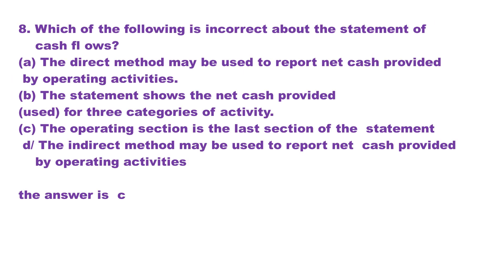Question 8. Which of the following is incorrect about the statement of cash flows? A. The direct method may be used to report net cash provided by operating activities. B. The statement shows the net cash provided or used for three categories of activity. C. The operating section is the last section of the statement. D. The indirect method may be used to report net cash provided by operating activities. The answer is choice C.